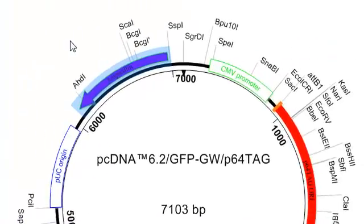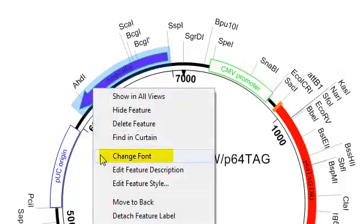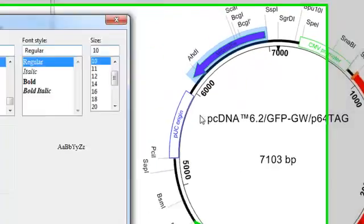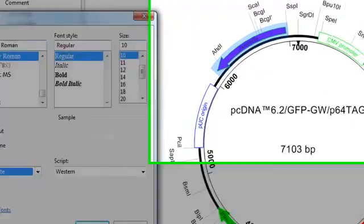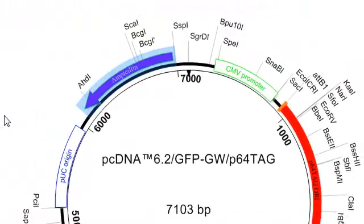And you can see that that change was made, but now the label is a little difficult to read. So, if I right-click on the feature and select Change Font, now I can change the font color to white, and that will make it easier to see.